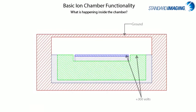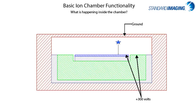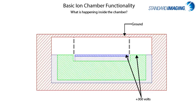Similar to the function of thimble chambers, charge collection of ionizations in air-filled parallel plate chambers works on the same principle. Again, the guard is essential in defining the collecting volume, and a well-guarded parallel plate chamber typically uses the rule of thumb that the guard thickness should be at least two times that of the size of the gap between the collector and the guard.